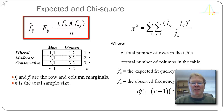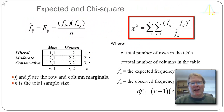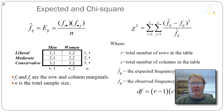Once I have the expected values, I move to the chi-square formula where I calculate the difference between each cell's expected value and actual observed value, square that difference, and standardize it by dividing through by the expected value. Those are called the cell chi-squares, and I sum all those values up across all the different cells.